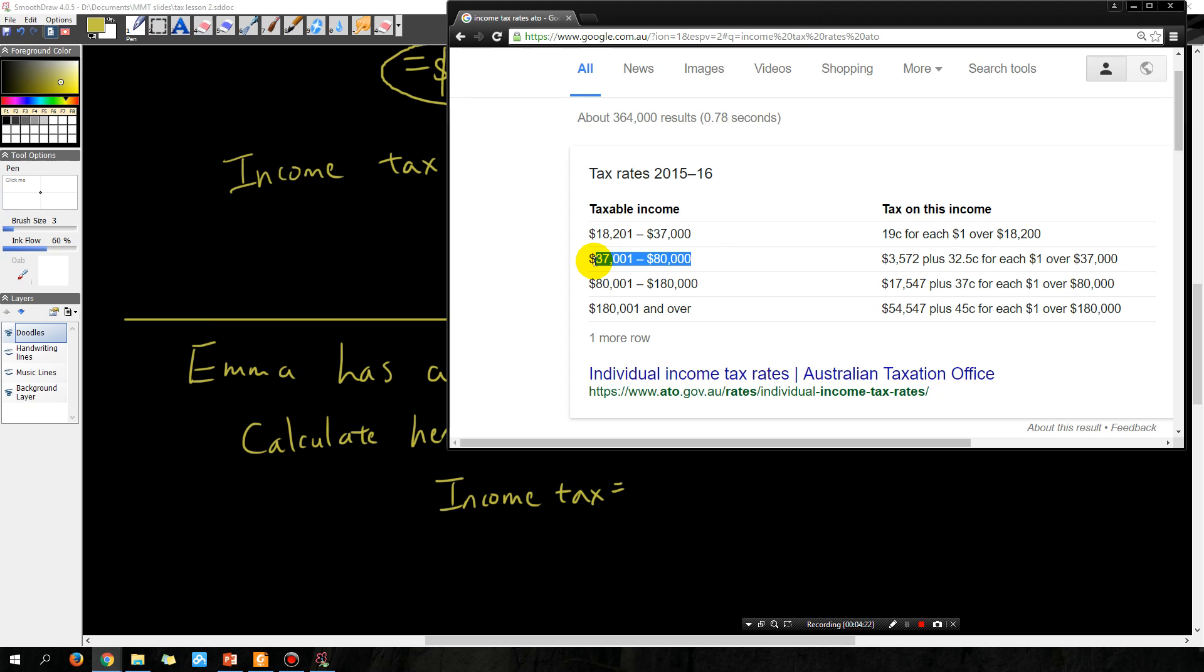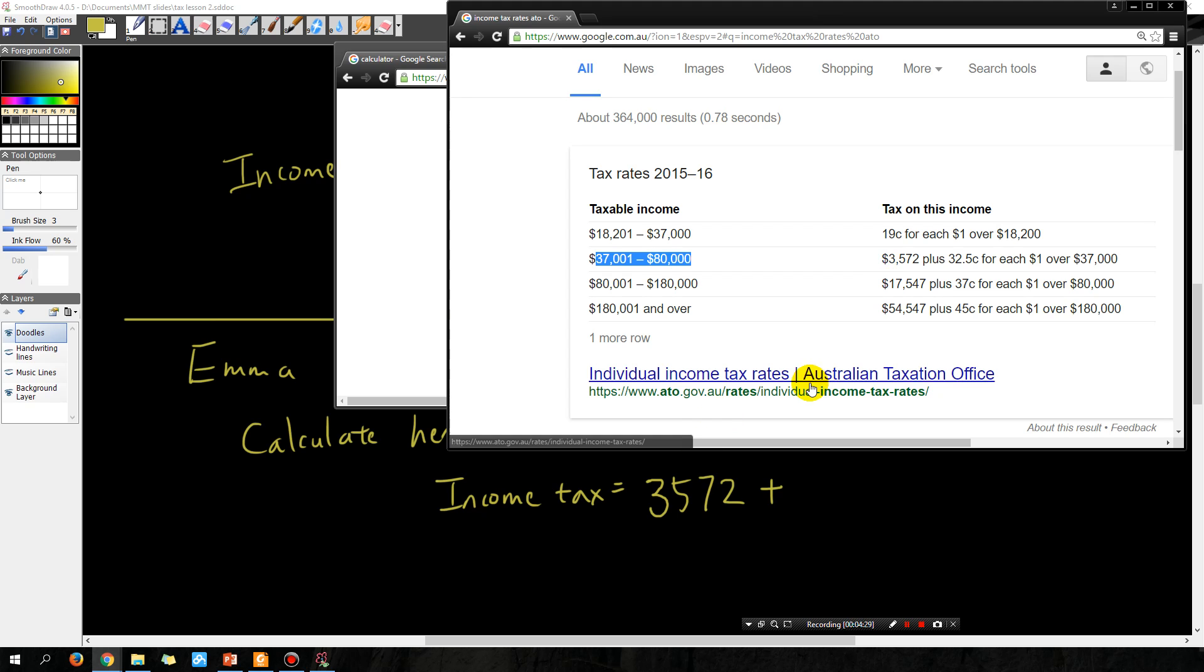So you're in this tax bracket, and it says that you have to pay $3,572 plus 32.5 cents for each dollar over $37,000.